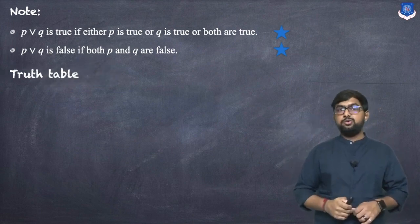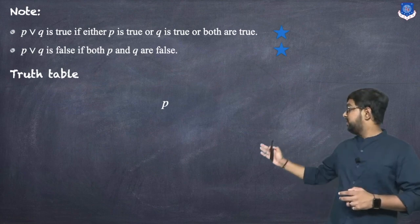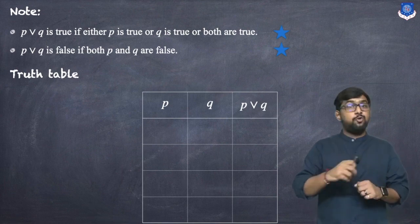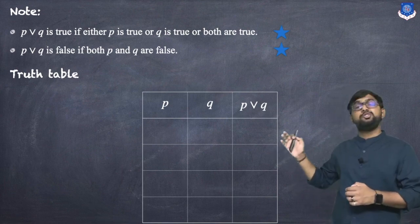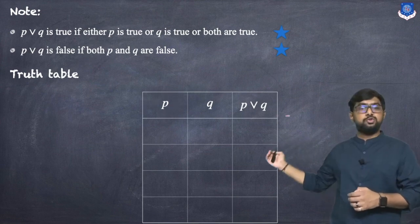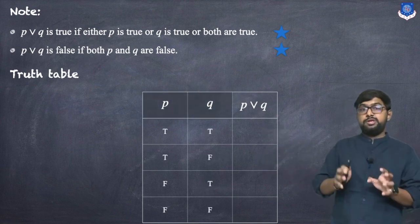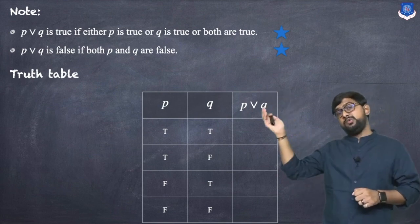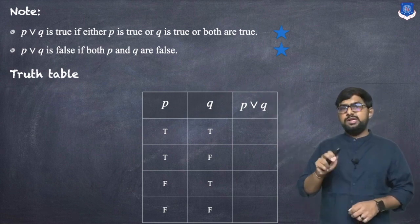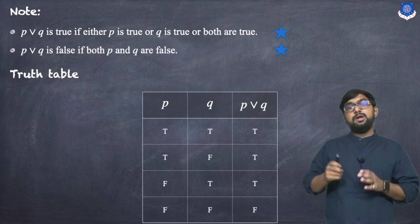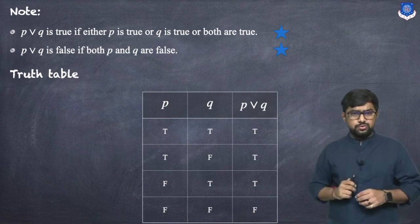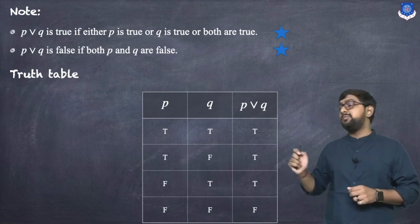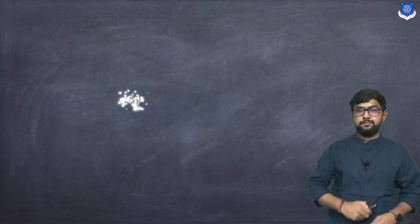In the truth table for P ∨ Q, there are again four possibilities. When both are true (T-T), P ∨ Q is true. When one is true (T-F or F-T), P ∨ Q is true. When both are false (F-F), P ∨ Q is false. So disjunction is false only when both statements are false.